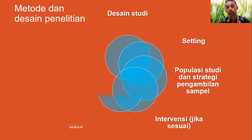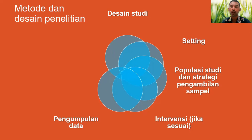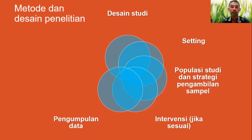Bagaimana pengumpulan data dilakukan perlu kita jelaskan. Kalau kuantitatif, bicara tentang angket — variabelnya seperti apa dan bagaimana menganalisis data dari angket itu. Kalau kualitatif, bagaimana data dikumpulkan: apakah ada proses wawancara, pengumpulan dokumen, focus group discussion, atau analisis terhadap dokumen-dokumen tertentu yang relevan. Di penelitian kualitatif, kita kadang perlu melakukan triangulasi atau perpanjangan pengamatan untuk menemukan apa yang kita ingin dapatkan.